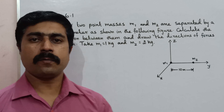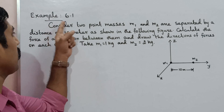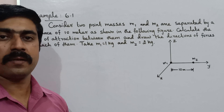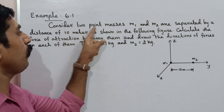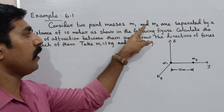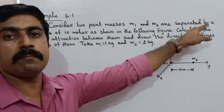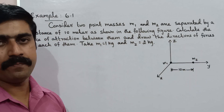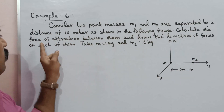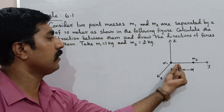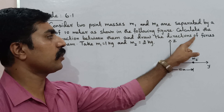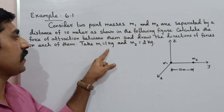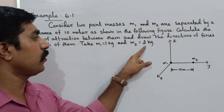Hi students. I am going to talk about a problem — Example 6.1. It is a simple problem. Consider two point masses M1 and M2 separated by a distance of 10 meters as shown in the following figure. Calculate the force of attraction between them and draw the directions of forces on each of them. Take M1 equal to 1 kg and M2 equal to 2 kg.